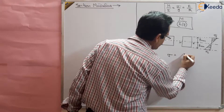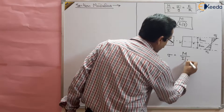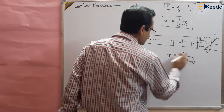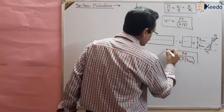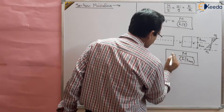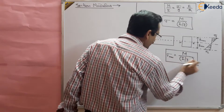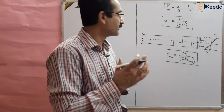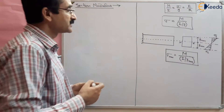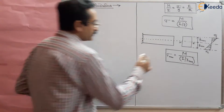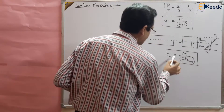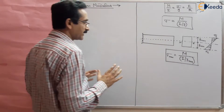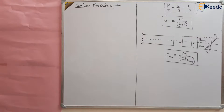So stress written here is M by I divided by y_max. This quantity I by y_max shows the strength of the material: if I by y_max is higher, stress will be lower; if I by y_max is lower, stress will be higher. So it shows the strength and rigidity of the material.